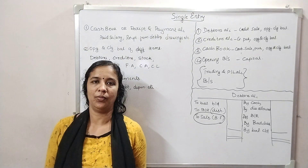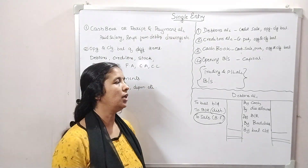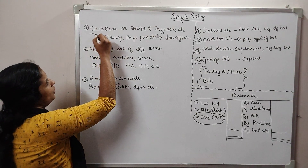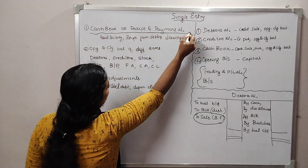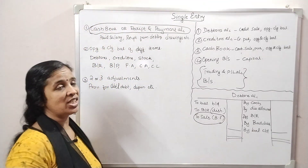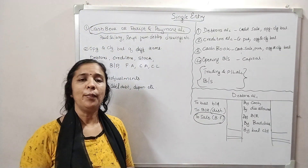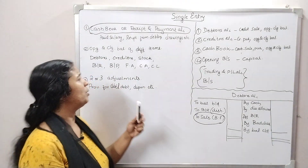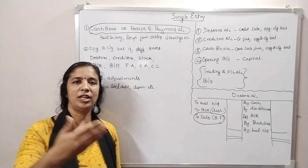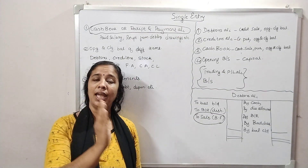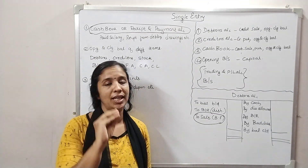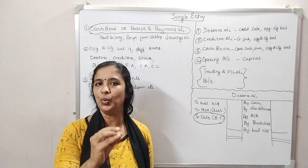There are three categories. If you have a cash transaction, you will be able to prepare the payment account. If you have a cash transaction, you will have a paid salary entry.